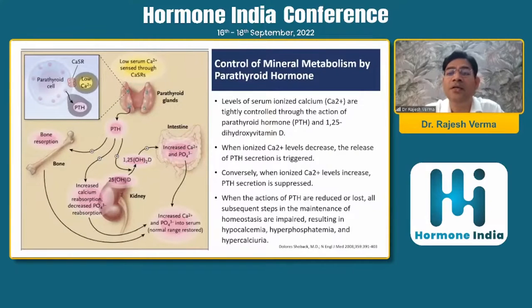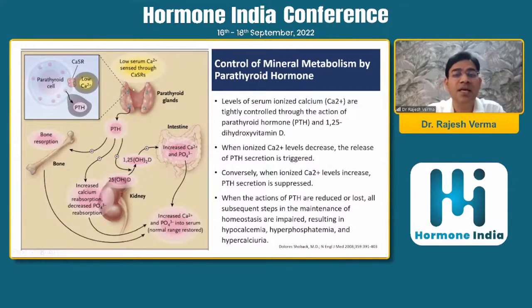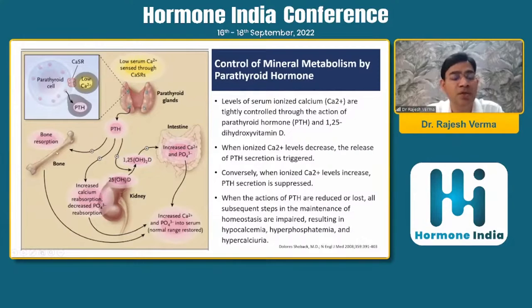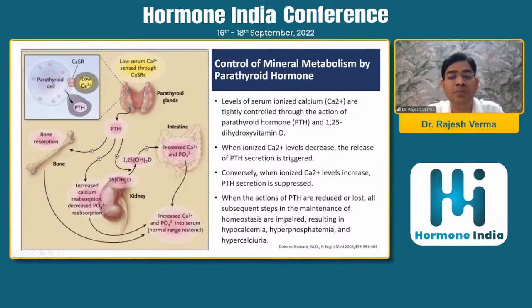How does PTH control mineral metabolism? Low serum calcium is sensed by the CASR receptors on the parathyroid cells, and their stimulation increases PTH in the circulation. This PTH acts at three levels: it goes to the bones, causing bone resorption and thereby increasing serum calcium levels; secondly, it goes to the kidneys, where it has an important role in conversion of 25-OHD to the active form of vitamin D, 1,25-OHD, which promotes intestinal absorption of calcium and increases serum calcium levels; and thirdly, it increases calcium reabsorption from the kidneys.